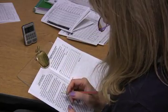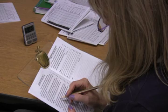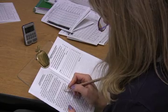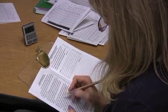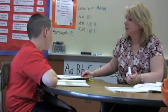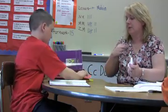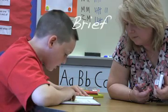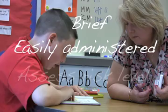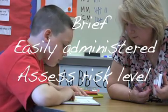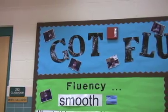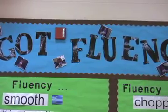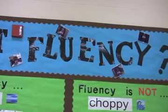One of the first steps in the implementation of an RTII model involves the screening of all students. This is a vital component of RTII and helps to identify those at risk for reading difficulties. This initial step involves all students in a building, not just those thought to be struggling. Screening measures are brief, easily administered, and designed to determine a student's risk level for academic difficulty. This is typically done three times throughout the school year and can involve assessing skills such as fluency, oral reading, phoneme segmentation, and letter naming.